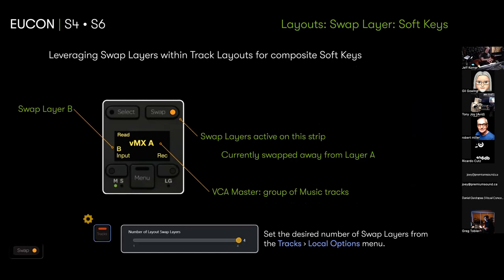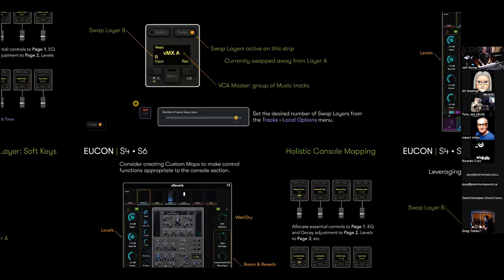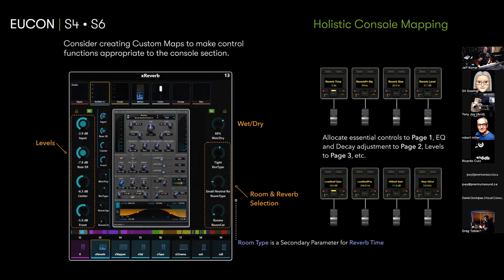I'm bringing Swap Layer back up because we're going to use it in my default set. A swap layer is part of a track layout — you can have up to four layers of things underneath the top-level track. We'll use it when we bring up a composite soft key that's a layout plus marker, or layout plus window config. I also want to discuss mapping best practices — holistic mapping — using multiple sections together to get an optimal workflow experience.